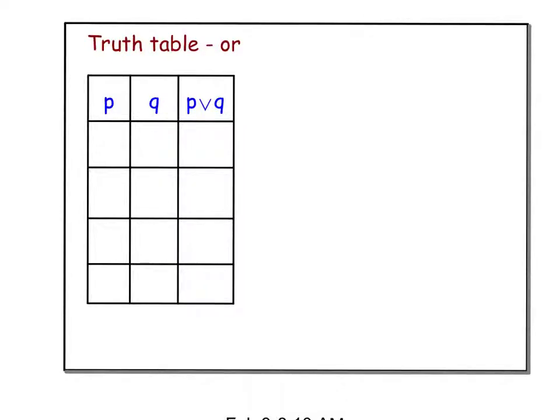I'm going to talk about how to construct a truth table with the disjunction OR.